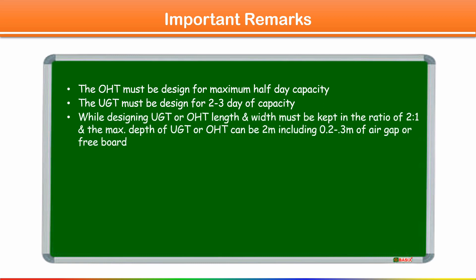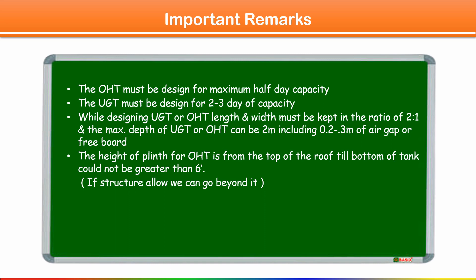While designing underground tank or overhead tank, length and width must be kept in the ratio of 2:1. The maximum depth of underground tank or OHT can be 2 meters, including 0.2 to 0.3 meter of air gap or freeboard. These points are as per the NBC and BIS standards.